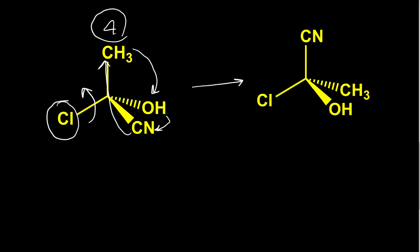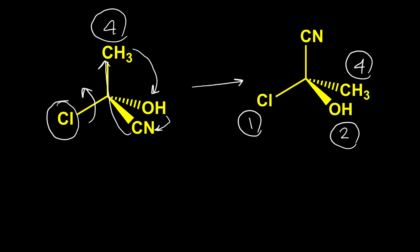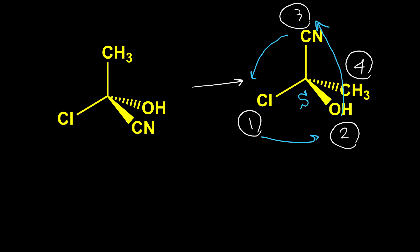The result is this structure. Now number four, the methyl group, is in the back. Chlorine is number one, OH is number two, and cyanide is number three. From one to two to three, rotation is counterclockwise and configuration is S. Because we only rotated the bonds, we have two different conformers, so the configuration of the second structure and first structure are the same. Configuration here is S as well.